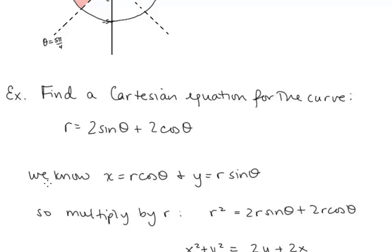Now let's find a Cartesian equation for the curve r equals 2 sine theta plus 2 cosine theta. We want an equation in x and y representing the same set of points. We know x equals r cosine theta and y equals r sine theta. When I see sine theta and cosine theta, I wish there was an r in front of each. So I can multiply the entire equation by r, giving us r squared equals 2r sine theta plus 2r cosine theta.